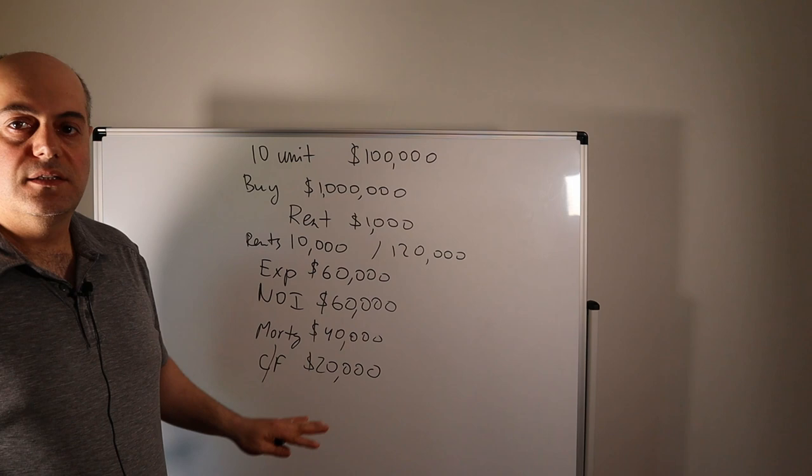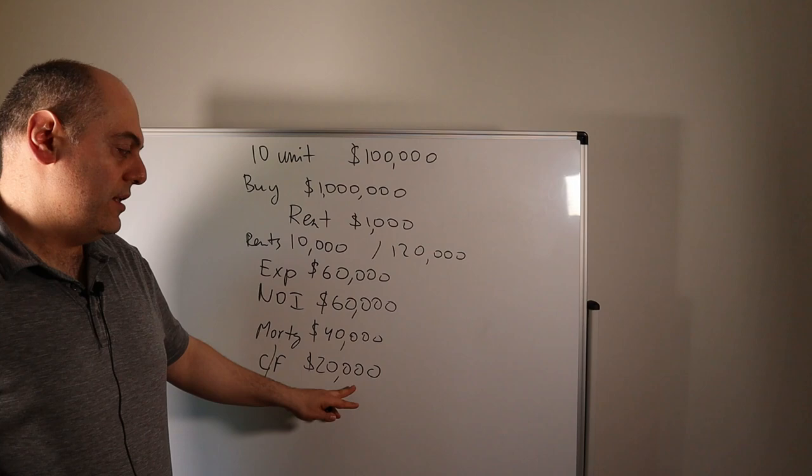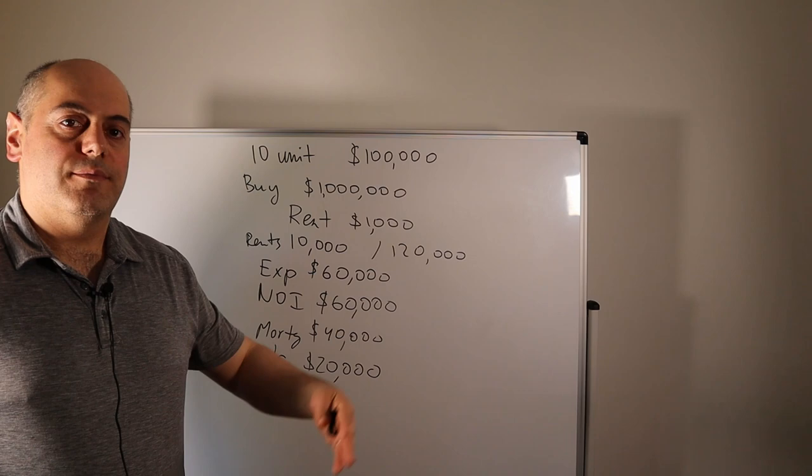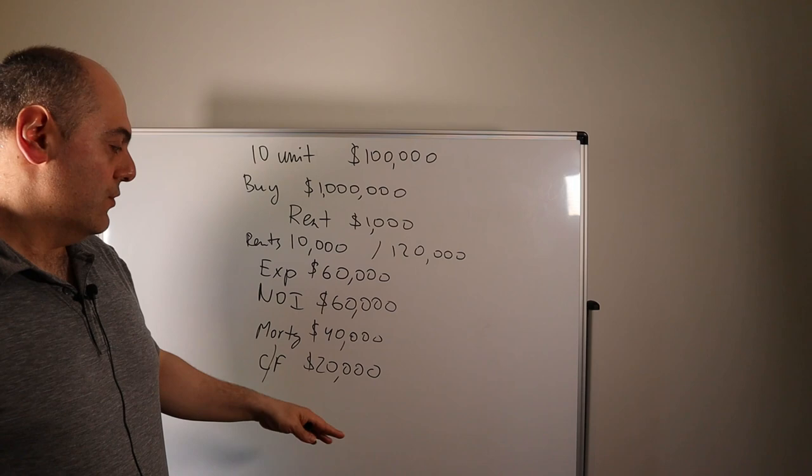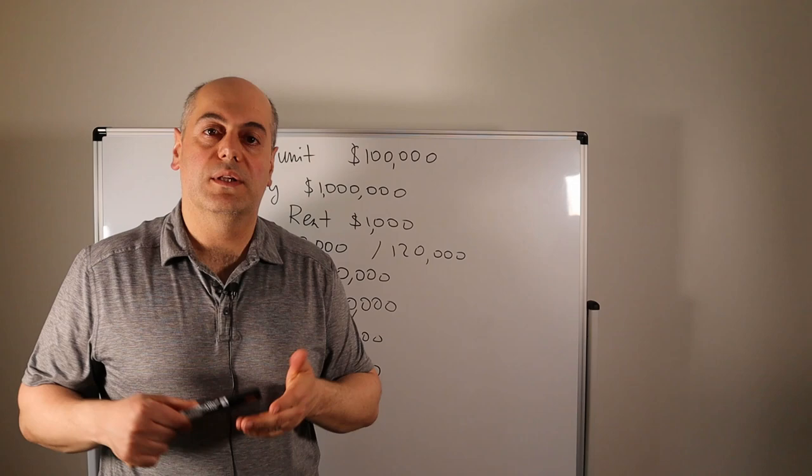So you buy the building and you get twenty thousand bucks in income. Now as time goes by, maybe you do some improvements, you increase the rents. Your rents will go up, therefore the cash flow will increase and the NOI will increase.